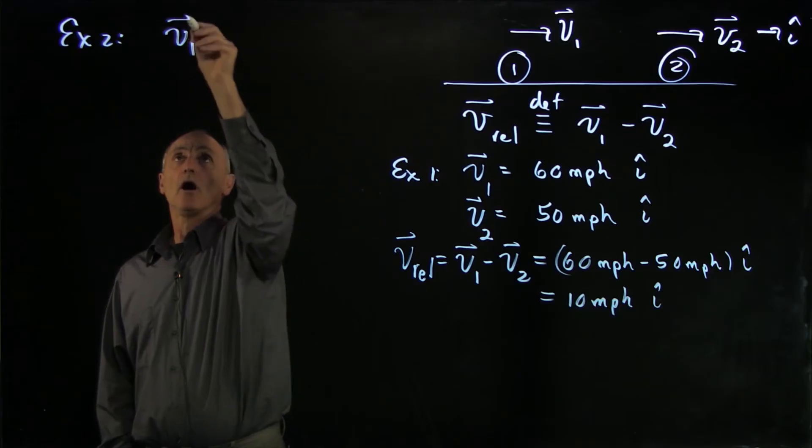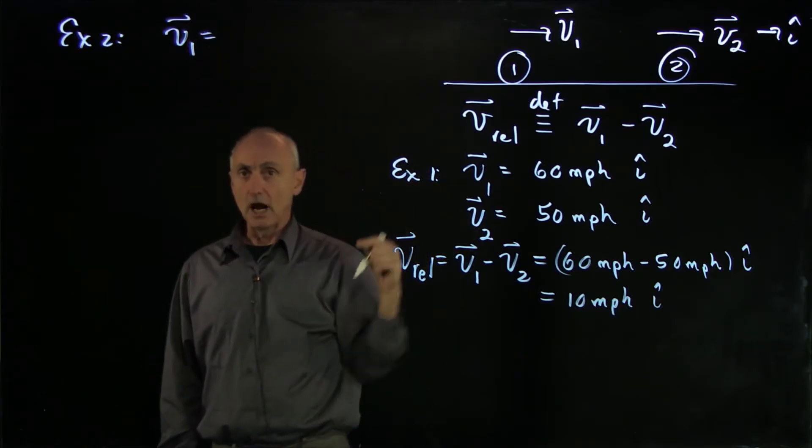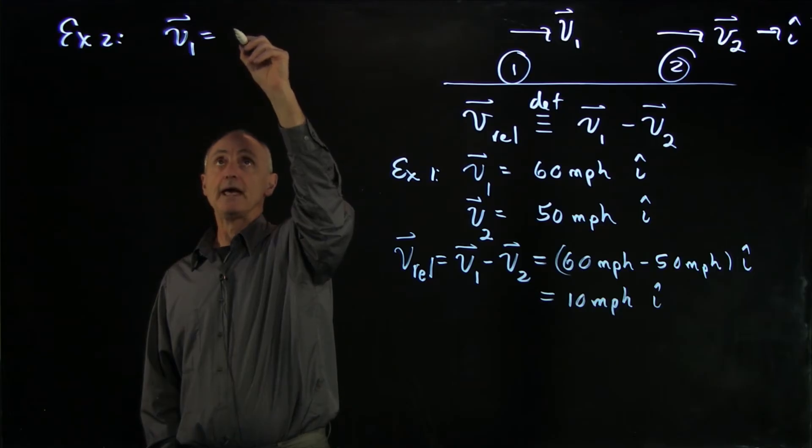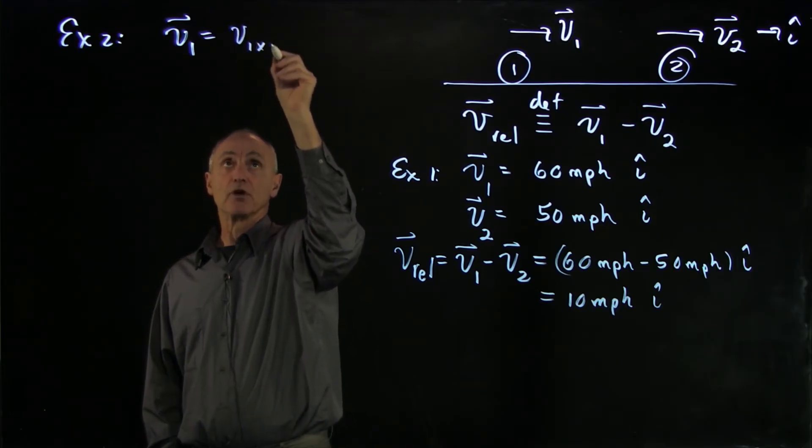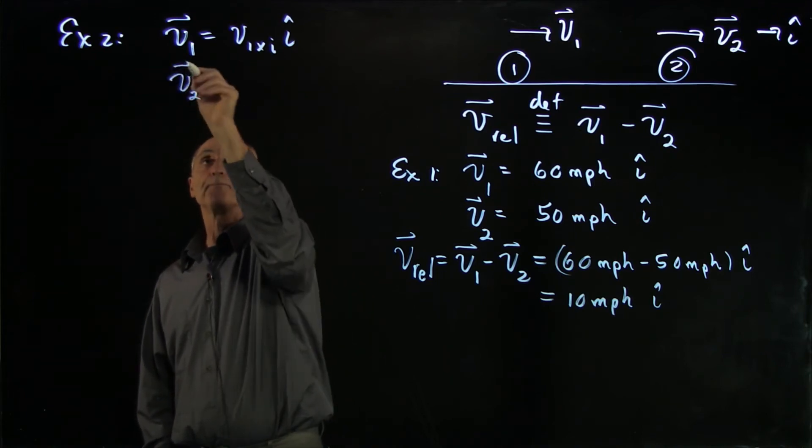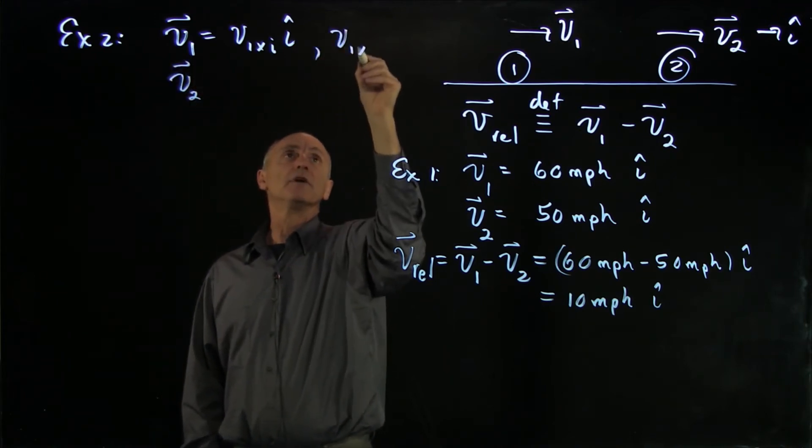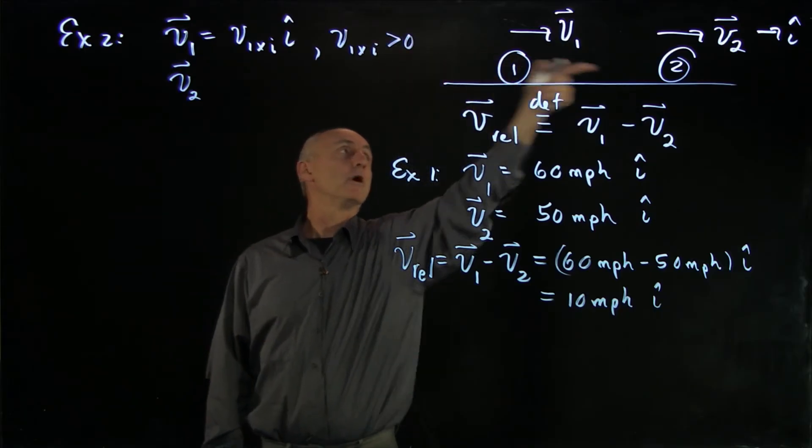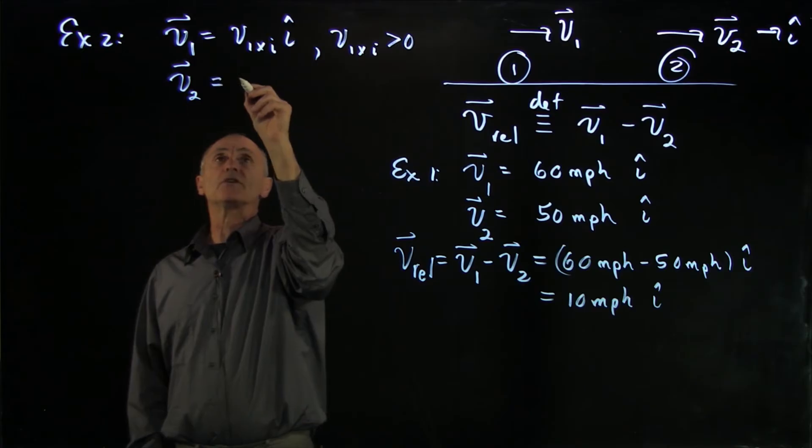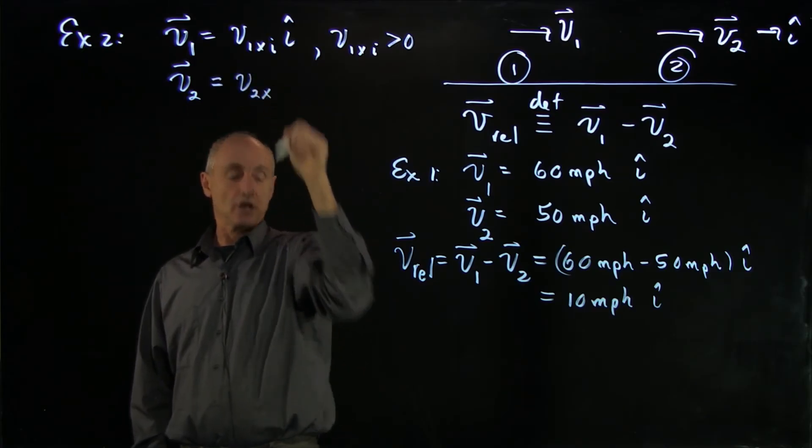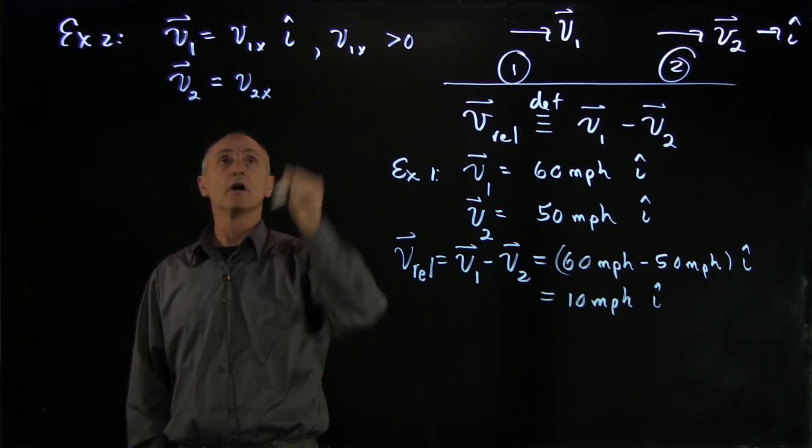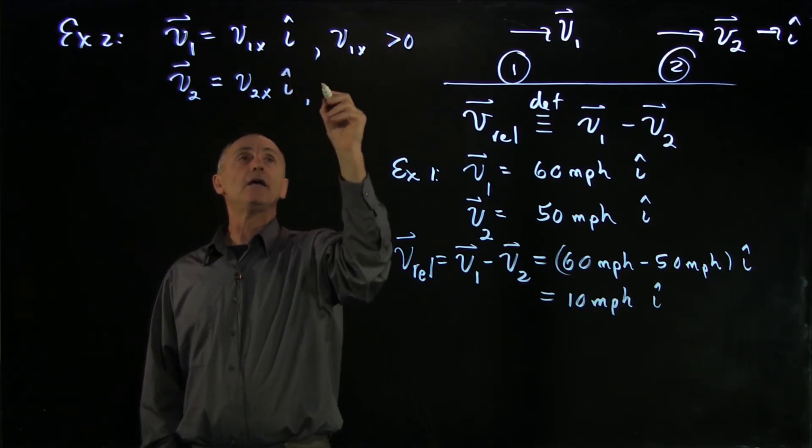is when two objects are moving in opposite directions. So let's just write here in terms of components this time. So we have v1x, and we have v2. And let's make v1x positive, so object 1 is moving in that direction. And let's write this one as v2x. We don't have to call this initial. We'll just call it v2x i-hat.